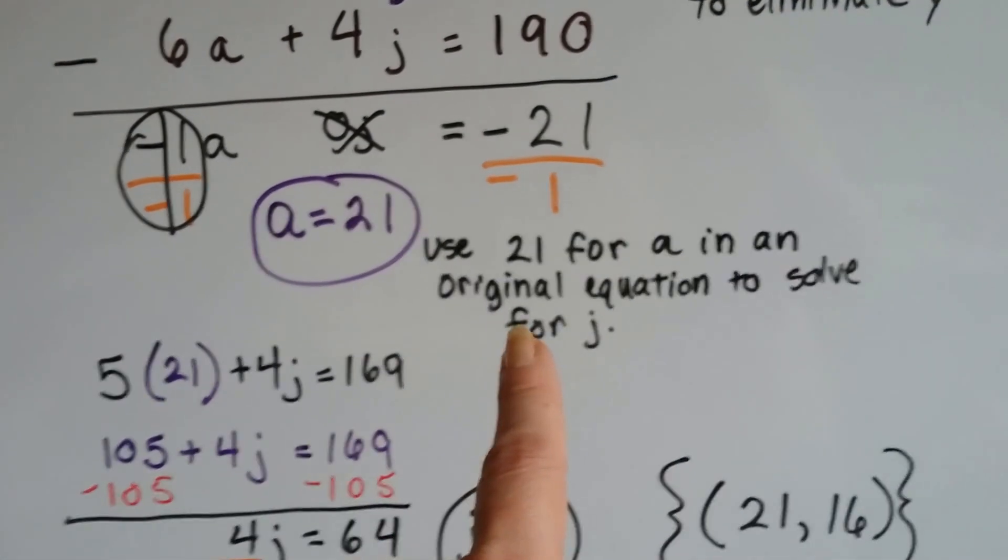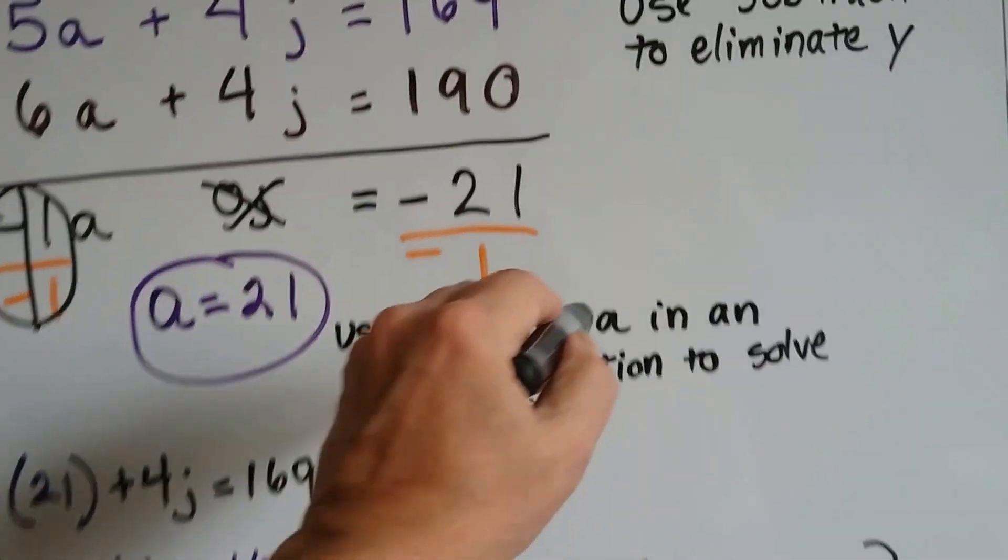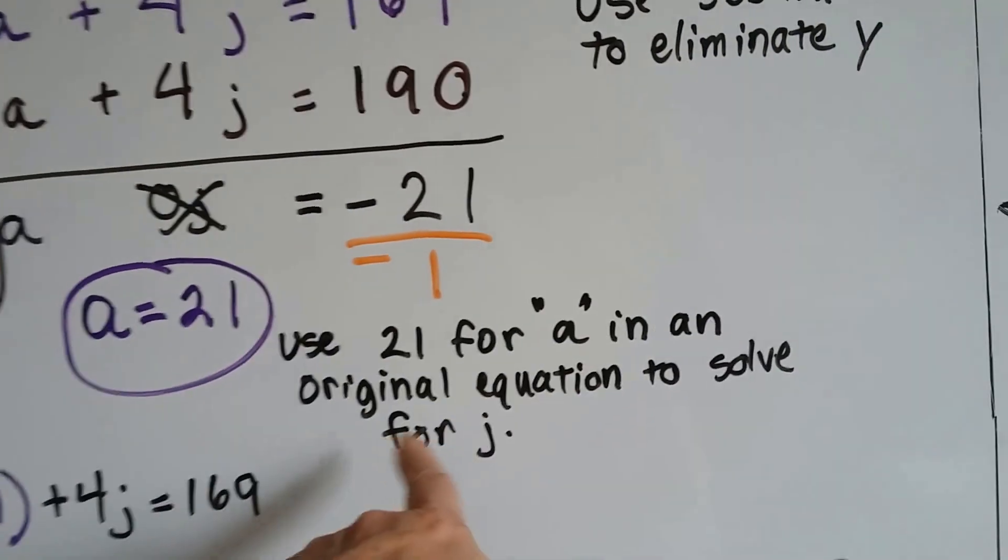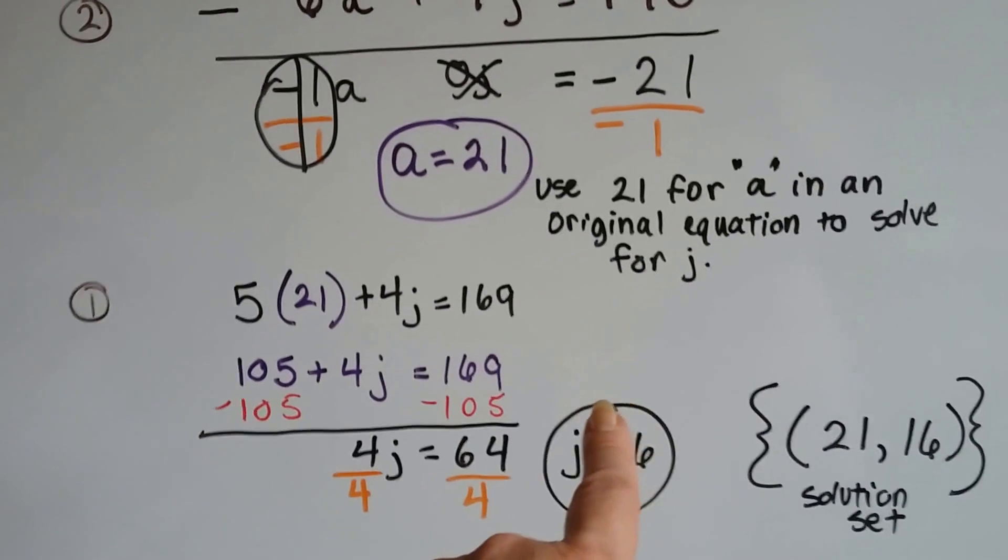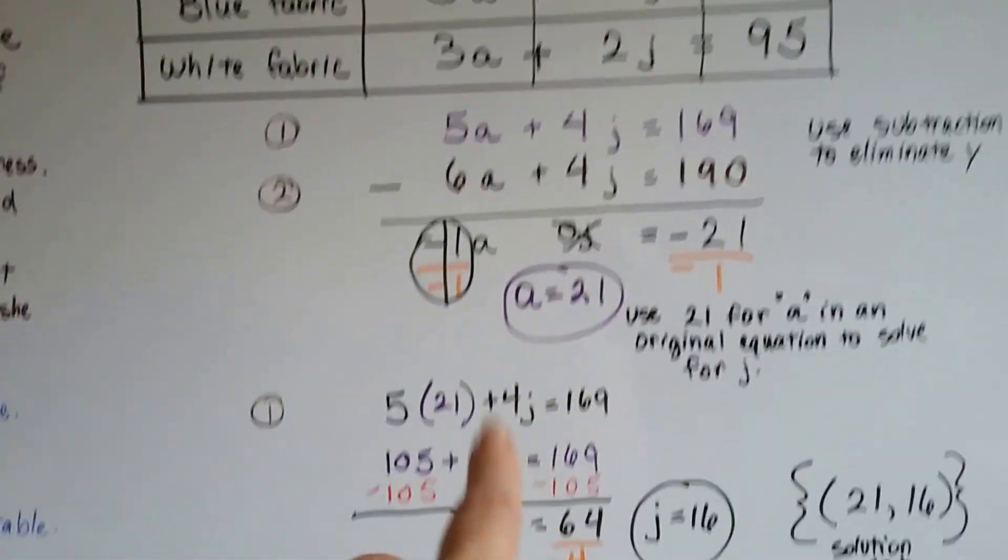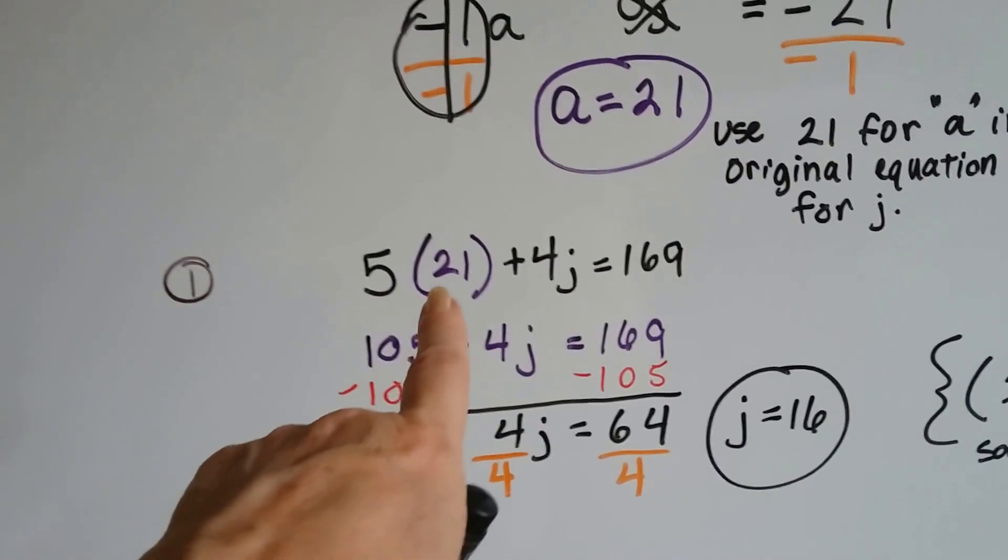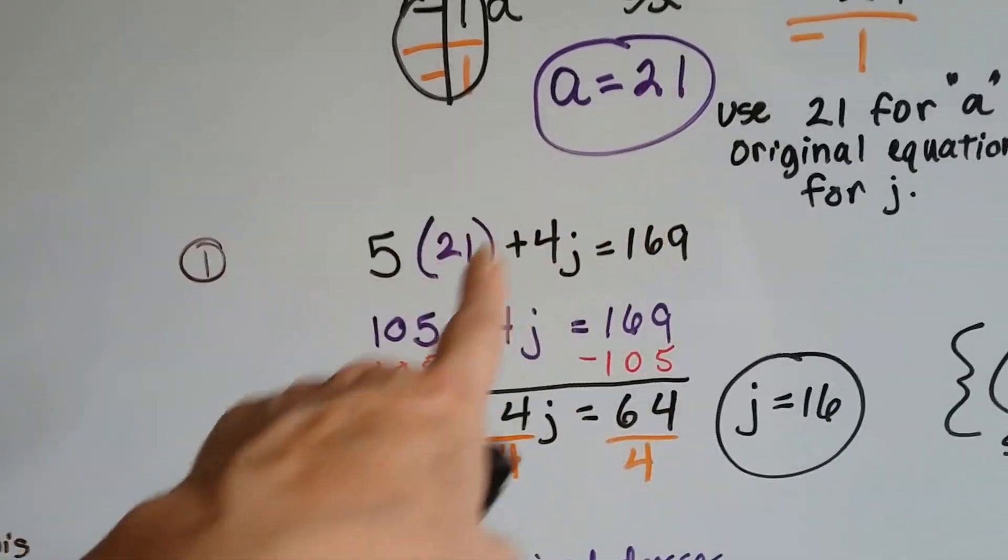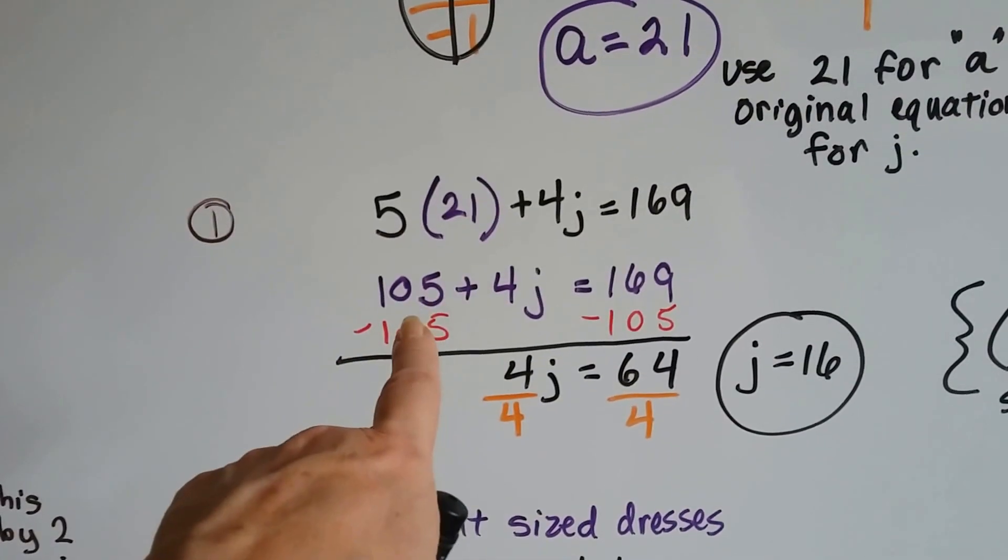So now we can use 21 for A in an original equation to solve for J. So I chose the top one. 5A plus 4J equals 169. So now instead of A, I'm going to put the 21 in. 5 times 21 is 105.